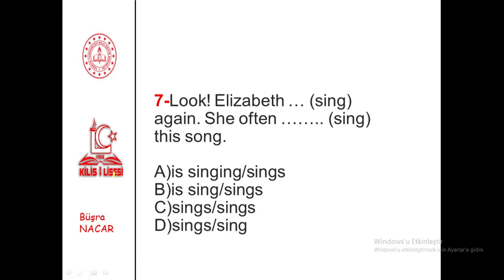Another inference question. 'Look, Elizabeth is singing again. She often...' Pay attention: it says 'Look' — meaning look at what Elizabeth is doing right now — so we can use Present Continuous. Options A and B remain for the first part. For the second part, 'often' is an adverb used with Simple Present, meaning 'frequently,' so we use Simple Present. Since -ing is not used there, option B is already eliminated. The answer is A.